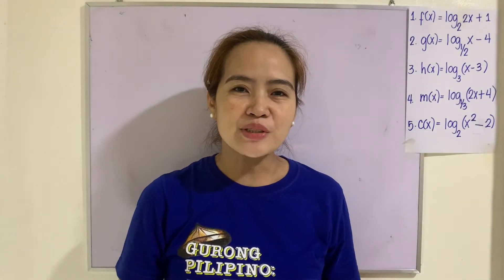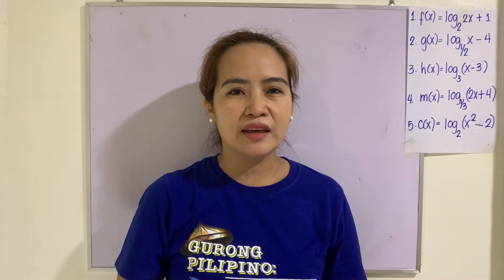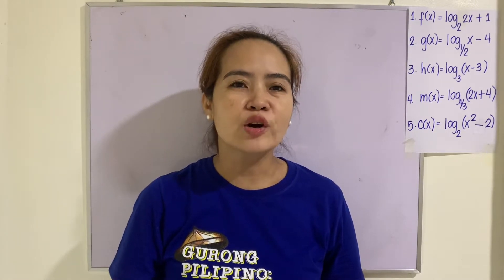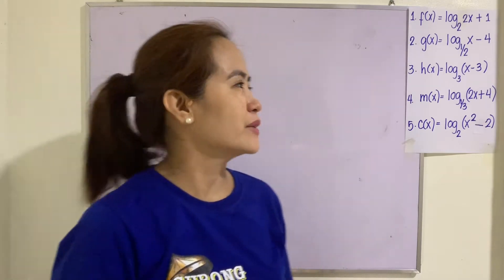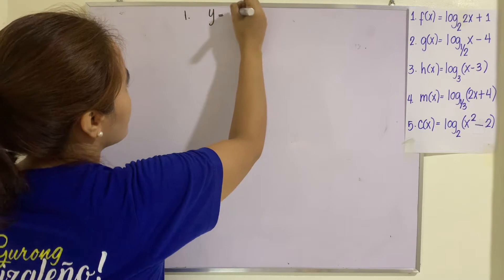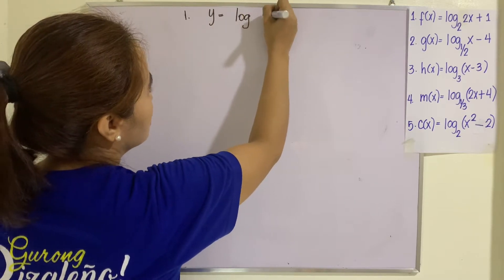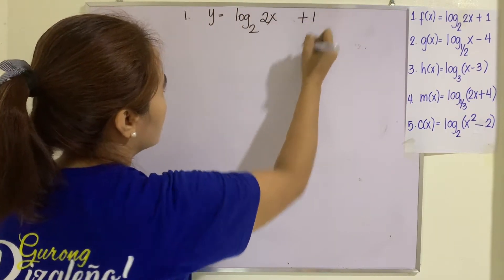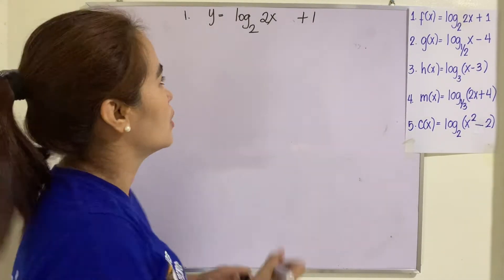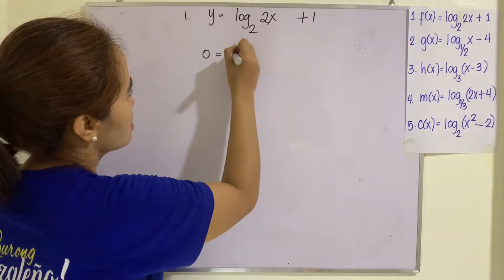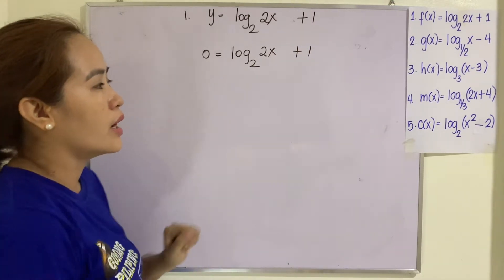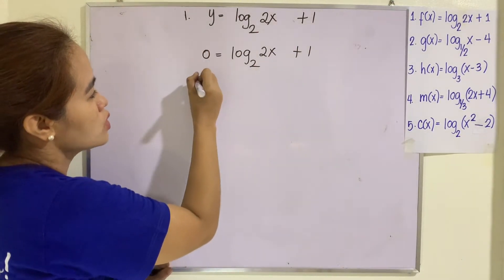Good day everyone. Our topic for today is finding the zeros, the asymptotes, and the intercepts of logarithmic functions. Number one: y equals log of 2x to the base 2 plus 1. In finding the zero, all you have to do is set y to zero, so that will be 0 equals log of 2x to the base 2 plus 1, and then you solve for x.